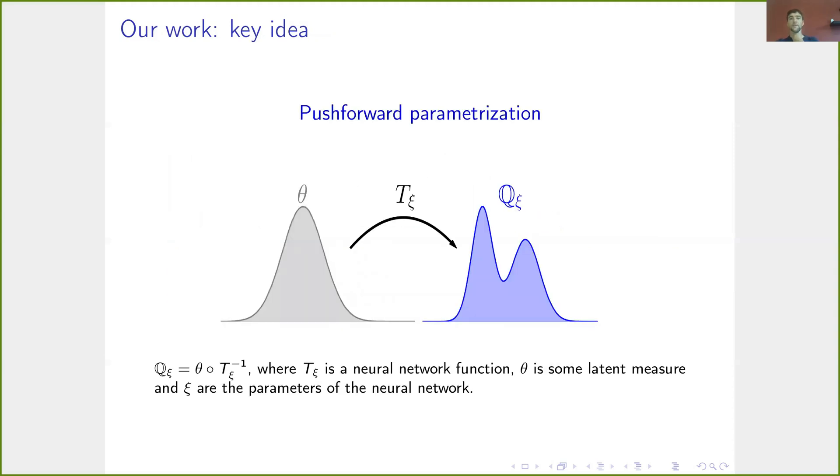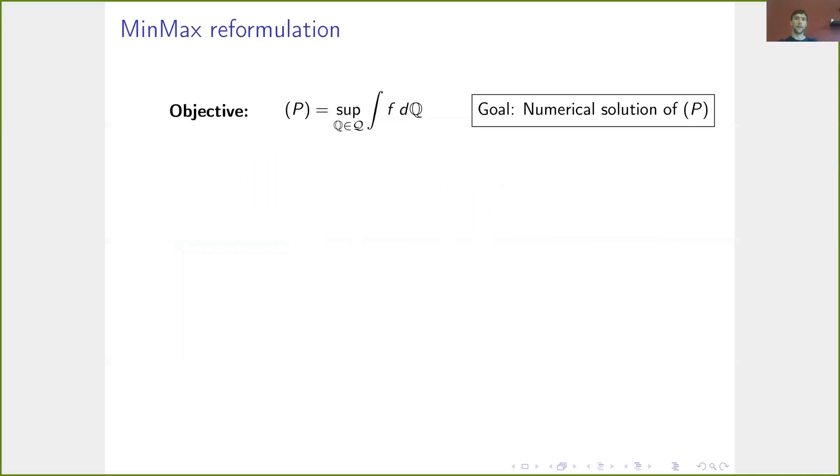And this is illustrated here. So the parameterized measures Q_ξ we work with are given as the push-forward measure of some latent distribution θ under a push-forward map T_ξ, where T_ξ is some neural network with parameters ξ.